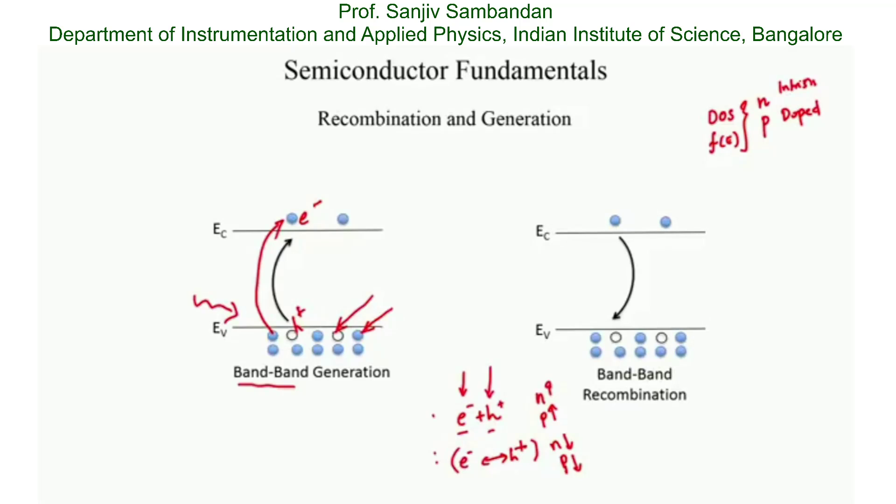Now what is band-to-band recombination? It is the exactly opposite process. You have an electron in the conduction band that was free and contributing to current, but now due to some reason, this electron has lost energy and dropped down into the valence band and recombined with this hole. This loss of energy typically results in some radiation. So probably this electron might release a photon when it loses this energy. This mechanism is called recombination, band-to-band recombination, directly from the conduction band to the valence band.